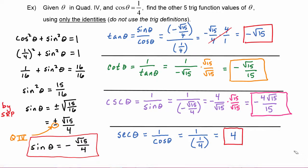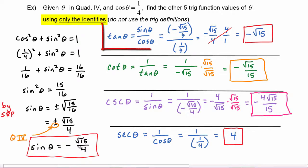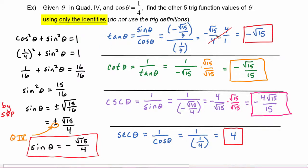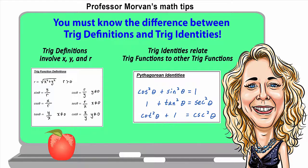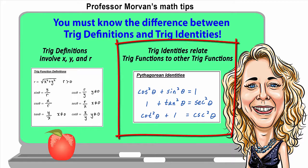When solving these problems using only identities, it's important to first show the identity you're using, then substitute in the values and simplify to get the answer. It's also important to know the difference between trig definitions and trig identities: trig definitions involve x, y, and r, while trig identities relate trig functions to other trig functions.